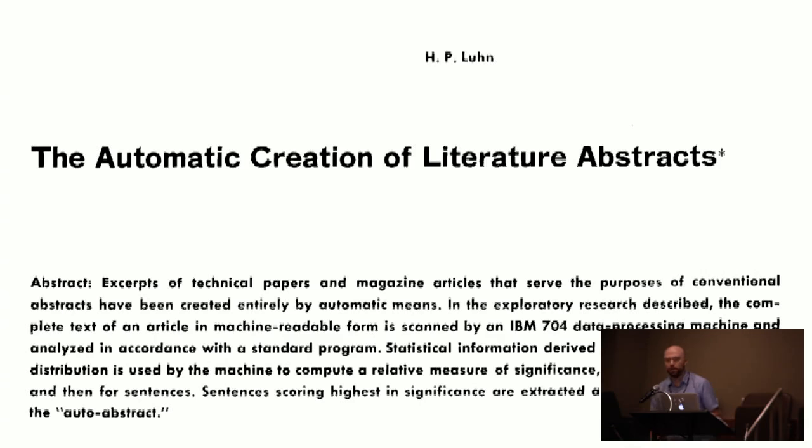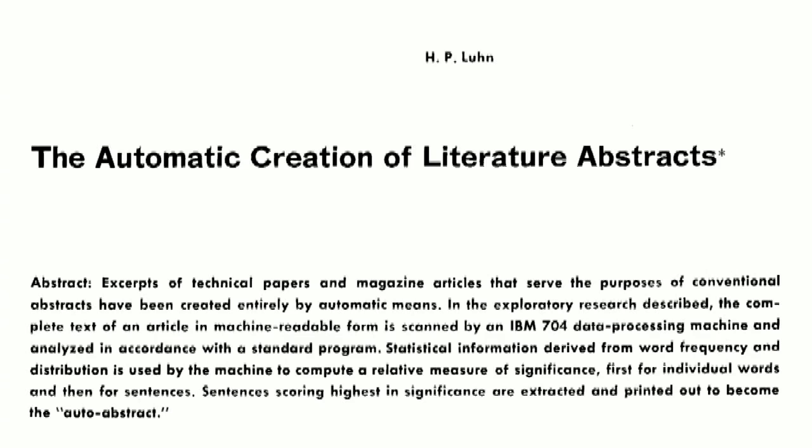This is Hans-Peter Luhn, who worked at IBM from 1941 until his death in 1968. He's important to our story because in 1958 he wrote 'The Automatic Creation of Literature Abstracts,' which is one of the early papers on document summarization and knowledge discovery. It's a great paper — very readable — and if you've never implemented an academic paper just for fun, this is a great place to start. It's a very simple algorithm; you could probably do it in three or four lines of Python.